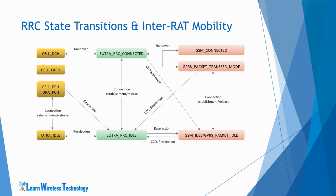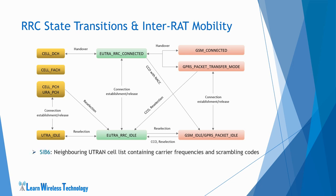To enable the reselection process, the UE performs measurements of various attributes or parameters of the serving and neighboring cells. For performing IRAT reselection to WCDMA, the UE searches for neighboring UTRA cells or WCDMA cells and starts measuring their attributes. The UE reads the SIB-7 message to know about the neighboring cells and scrambling codes.